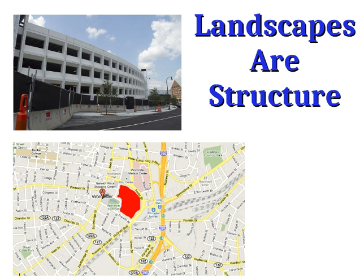A landscape can be a form of structure. Both the physical construction of that landscape and the meanings embedded in it can act to constrain and enable our exercise of agency. As an example, the Worcester Common Outlets was a giant outlet mall built in the center of Worcester, Massachusetts. As you can see in the map, the red area is the mall right in the middle of downtown. A number of important streets were eliminated to create it, with the hope it would be a big economic boon for the city.